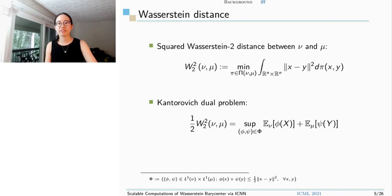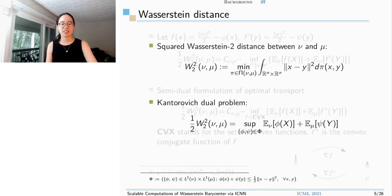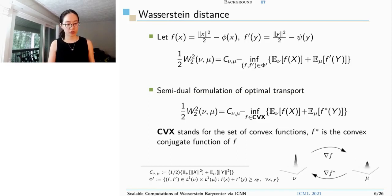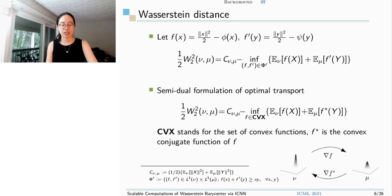This brings us much convenience. We can continue and let f(x) to be half of x norm squared minus phi(x), and f' to be half of y norm squared minus psi(y). Then the Kantorovich dual problem boils down to C(nu, mu) minus infimum of expectation f(x) plus expectation f'(y).